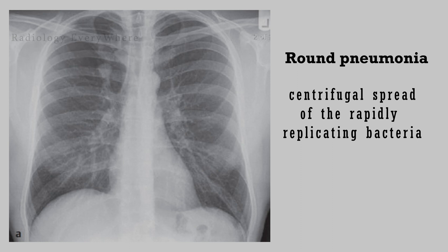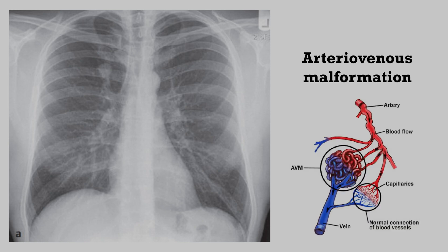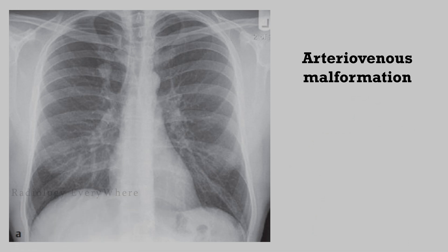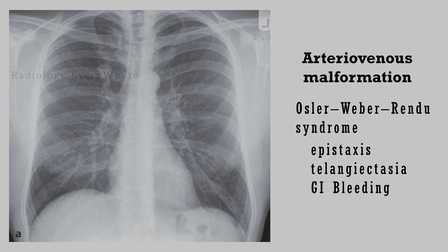When considering AV malformation as a solitary lung nodule: arteriovenous malformations are abnormal communications between a pulmonary or systemic artery and a pulmonary vein. If you see multiple AVMs, these are 90% associated with Osler-Weber-Rendu syndrome, also known as hereditary hemorrhagic telangiectasia,